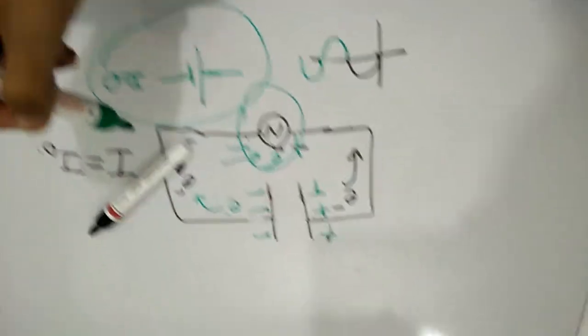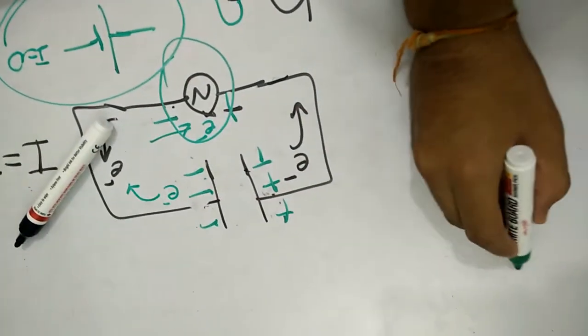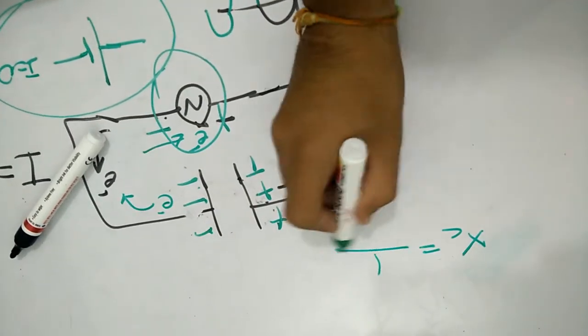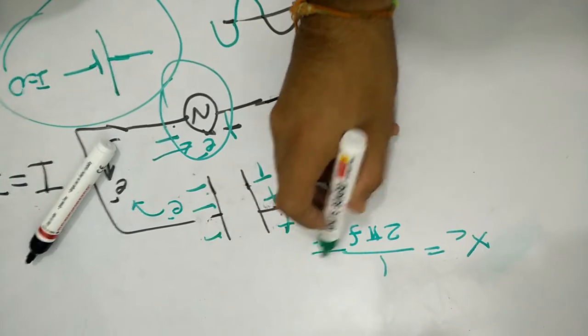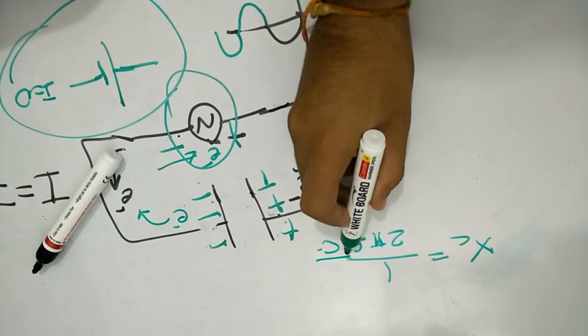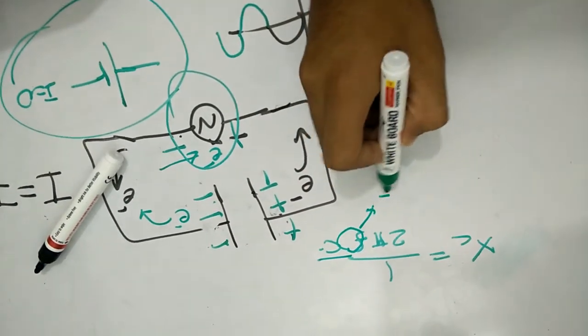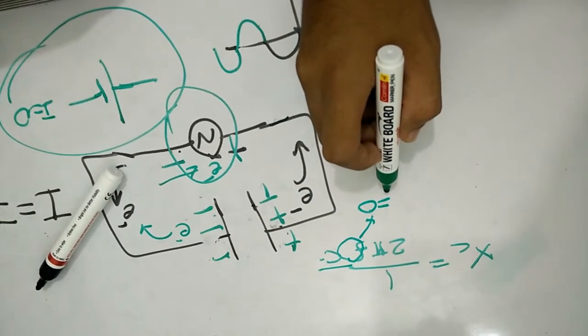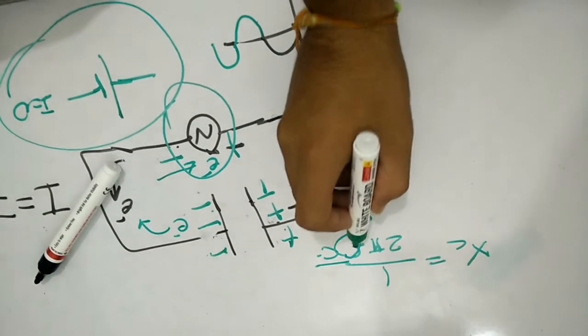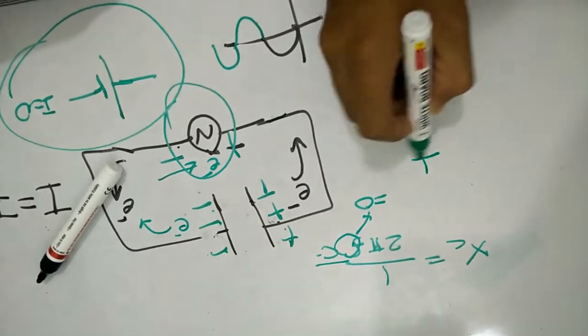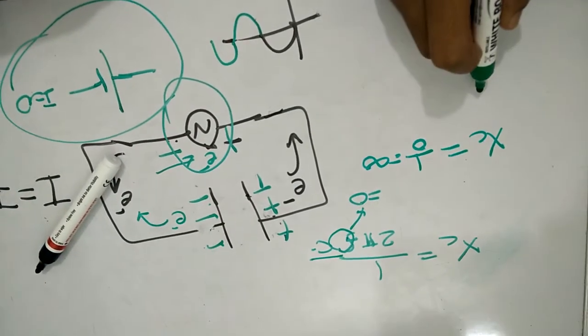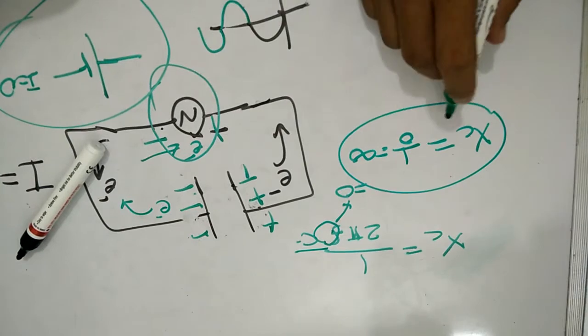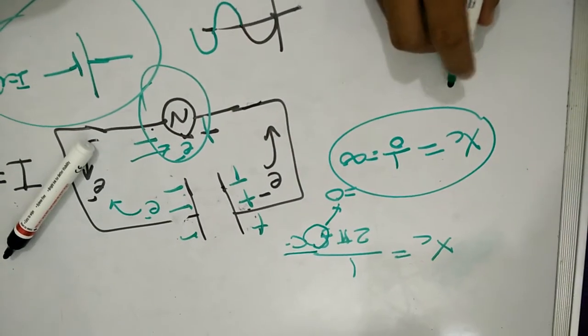This is the main concept. There is one more, as you can prove, that is Xc. We know that it is 1 upon 2πfc. So for DC, f is equal to 0. So if this is 0, 1 upon 0 is infinity. So Xc will be infinity. Xc is nothing but resistance of the capacitance, so this will be infinity.